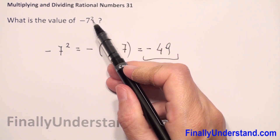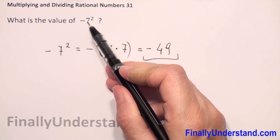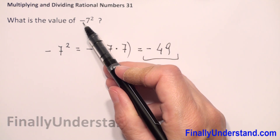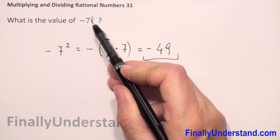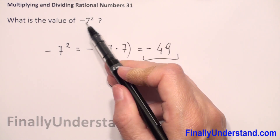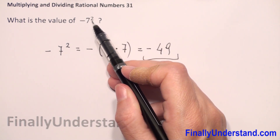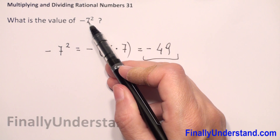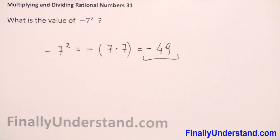We only raise seven to the second power — we don't raise the negative sign to the second power, because there are no parentheses here. Negative seven to the second power in parentheses would be different. We have only seven to the second power, so the negative sign we keep separate and rewrite.